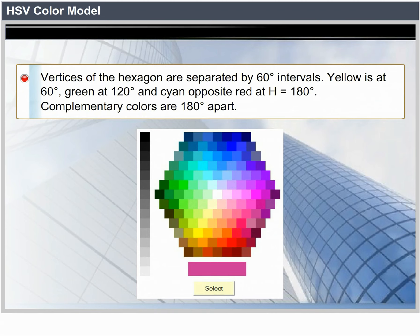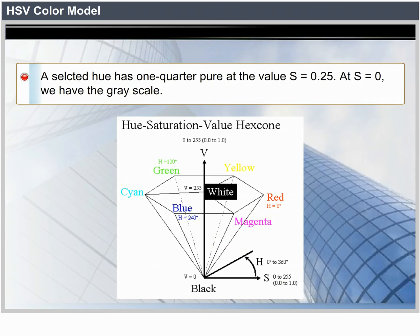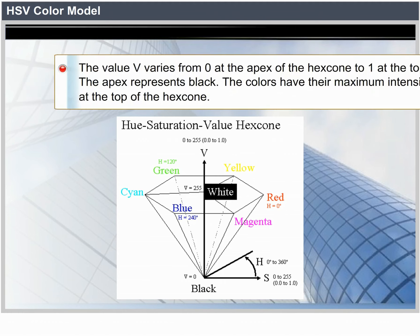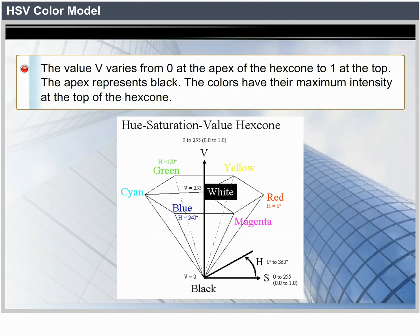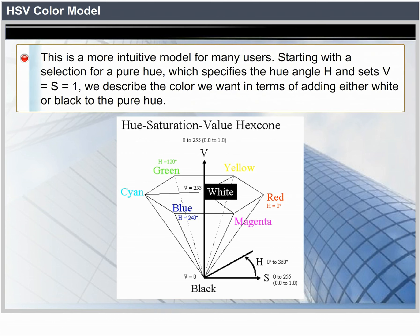Complementary colors are 180 degrees apart. Saturation S varies from 0 to 1, represented as a ratio of the purity of a selected hue to its maximum purity at S equals 1. A selected hue is said to be one-quarter pure at S equals 0.25; at S equals 0, we have the gray scale. Value V varies from 0 at the apex of the hex cone to 1 at the top. The apex represents black; at the top, colors have their maximum intensity. When V equals 1 and S equals 1, we have the pure hues. White is the point at V equals 1 and S equals 0.